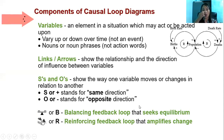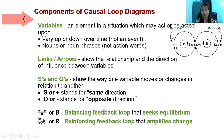The components of a causal diagram include variables — these are the elements in a situation which may act or be acted upon. They can go up and down, they are nouns or noun phrases, and they can be measurable.